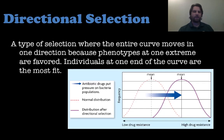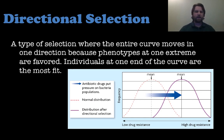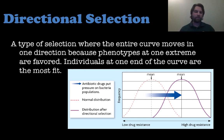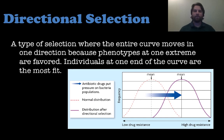Directional selection is when the entire bell curve shifts in one direction — the mean moves from one spot to another. This means one extreme of a trait is favored, and the individuals at one end of the bell curve are the most fit, so the new bell curve is shifted over. A great example is bacteria and antibiotics: bacteria with high drug resistance are more favored to survive, so you see more of them over time.